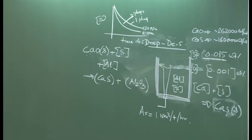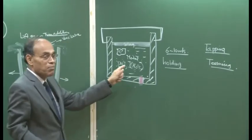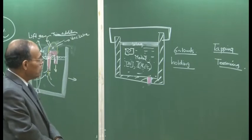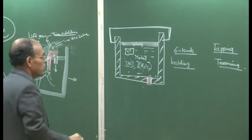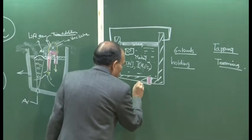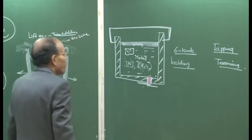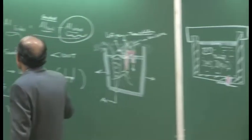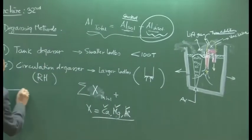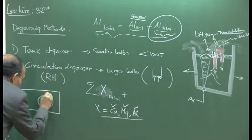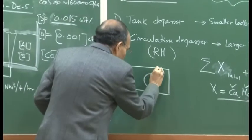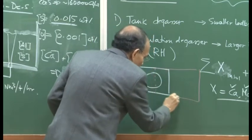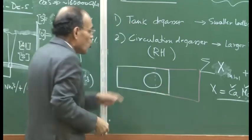Once holding is over, we want to empty the ladle and cast the molten metal. The draining of the ladle is done through a slide gate valve at the bottom, which has two refractory plates. One plate has a hole through which molten metal flows, and by sliding the second plate, you can control the size of the aperture.